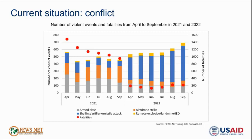On the other hand, the number of incidents of shelling and artillery attacks and incidents involving remote explosives increased during the truce period given some shifting patterns of conflict. However, during the truce period since April, rates of conflict-driven fatalities have been the lowest recorded in several years, largely due to the sharp reduction in Saudi coalition airstrikes. Declining levels of conflict have also resulted in a reduction in civilian casualties, lower levels of population displacement, improved humanitarian access, and some slight improvements in the business and trade environment, although some key trade routes remain closed.